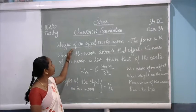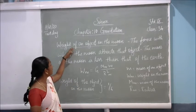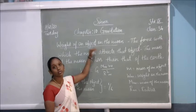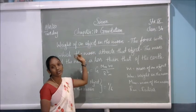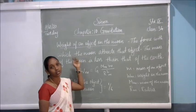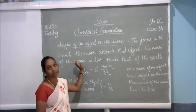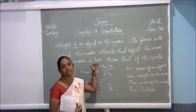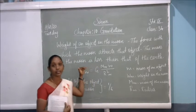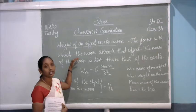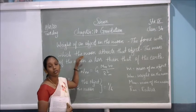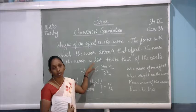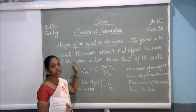Today in this class, we are going to see the weight of an object on the moon. In the previous class, we discussed about mass and weight. What is meant by mass? Mass is a measure of the inertia of the object. Weight is the force acting on the object. That is called weight.